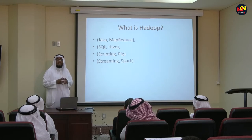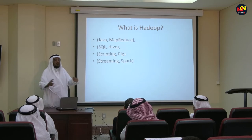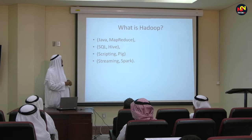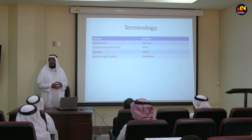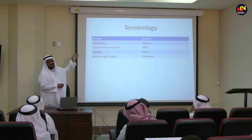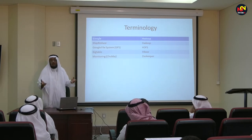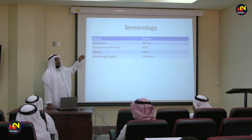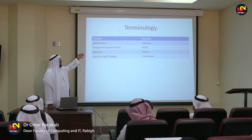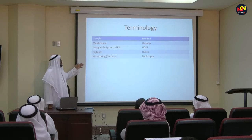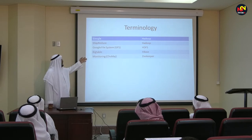In MapReduce you write the Map and Reduce functions to process data. Because it is built on Java, you can use Java. But there is also something called Hive, something called Pig, and something called Spark — these are the technologies. Hadoop originated from Google and Yahoo, who were dealing with more and more data. Google started with something called MapReduce, and it became open source. It is now named Hadoop. There was something called the Google File System; now it is called the Hadoop Distributed File System. BigTables is now HBase. Monitoring using Chubby is now ZooKeeper.